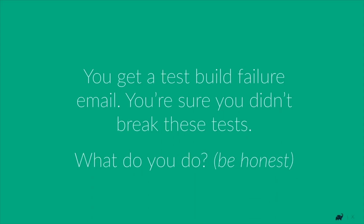Before we move on I want to give you a quick poll. Imagine that you get a test build failure email and you're sure you didn't break the tests. What do you do? Do you do nothing? Do you manually disable the test? Do you add a retry annotation? Or do you pretty much immediately try to fix the test yourself?